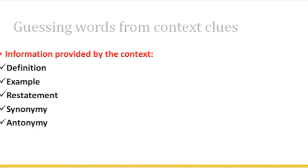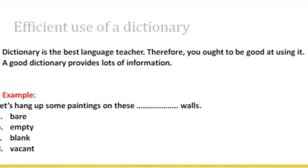Information provided by the context includes: a definition, an example, a restatement, a synonym, and an antonym. We will define every one of these. Also important is the efficient use of a dictionary — a dictionary is the best language teacher. Therefore, you should be good at using it, because a good dictionary provides lots of information.